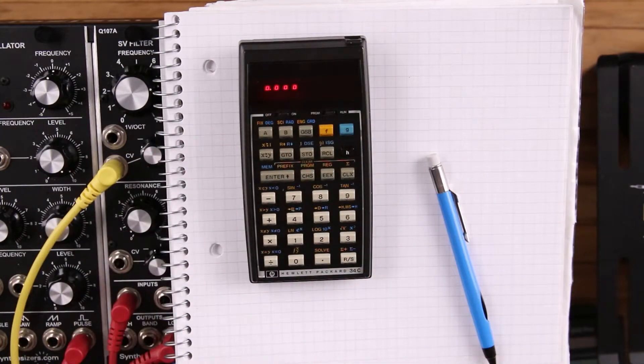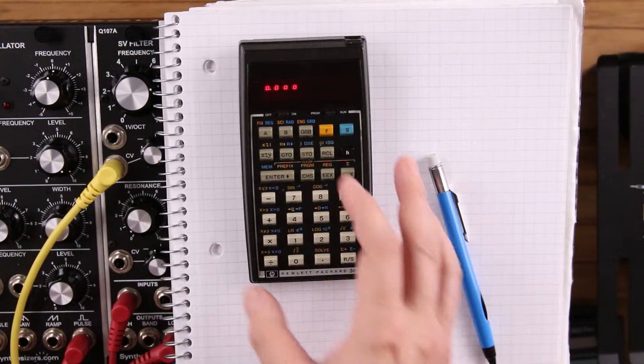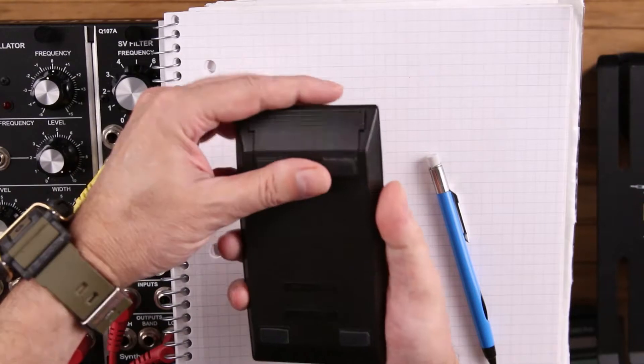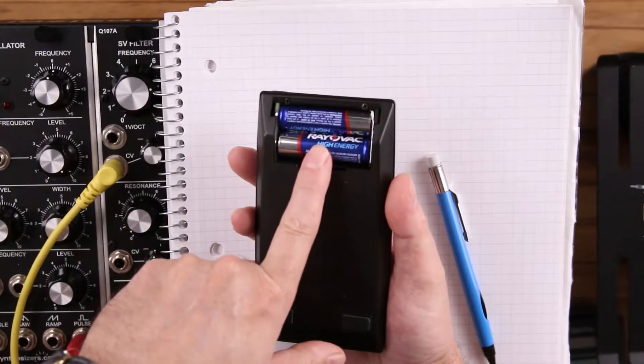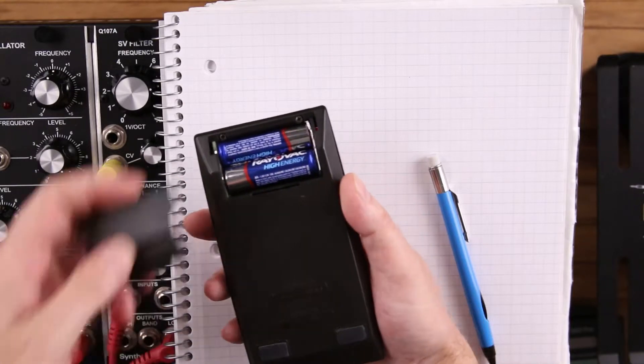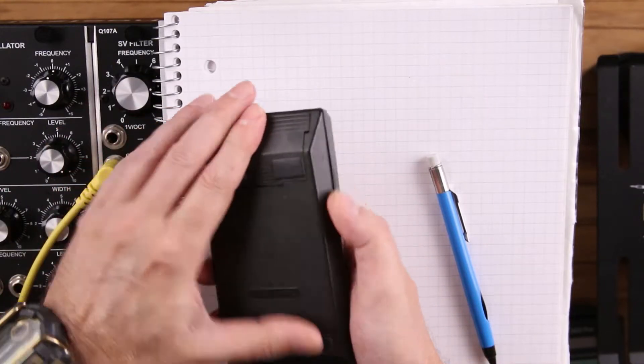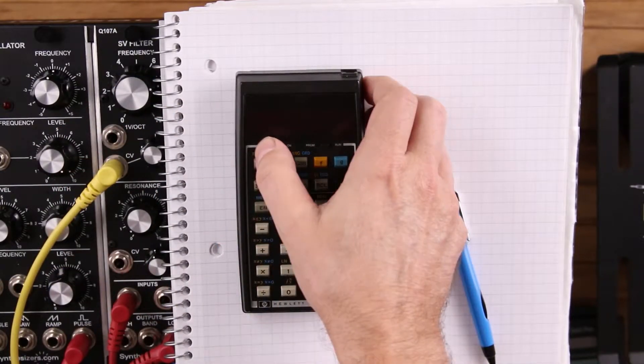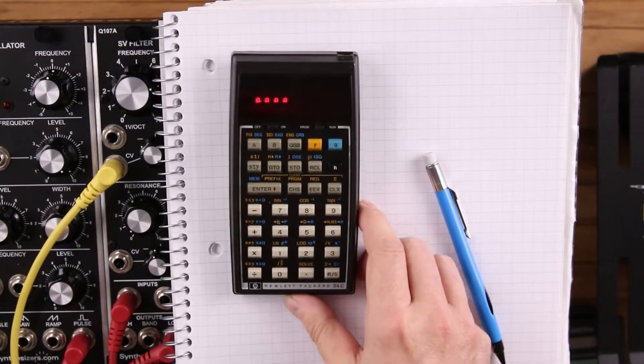So we have a working HP 34C now. Also, this one didn't have a battery, so I wedged in some AA batteries and a piece of aluminum foil to make the series connection. So here we have a 34C. This is a great little calculator.